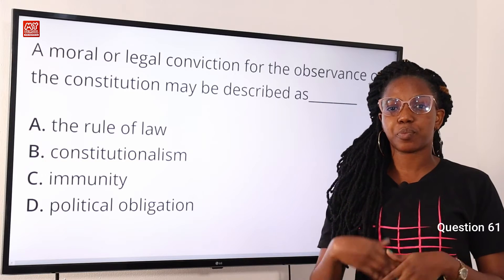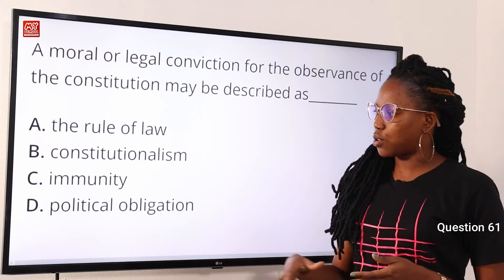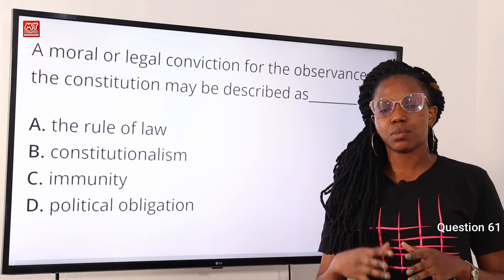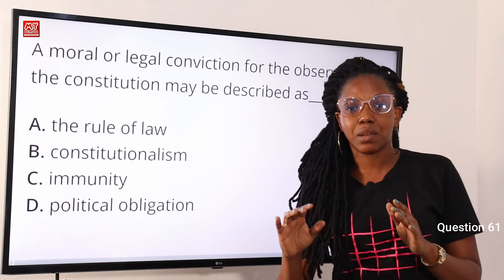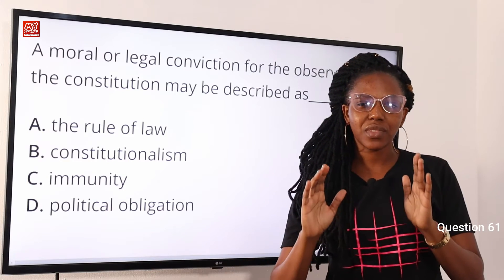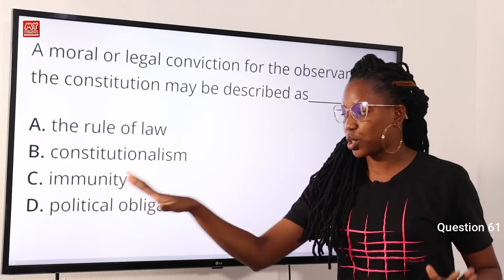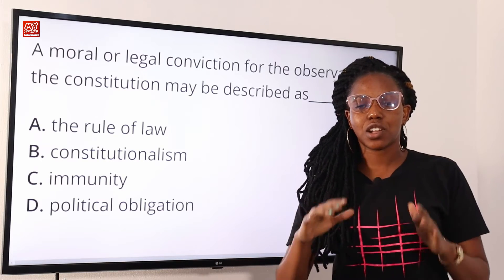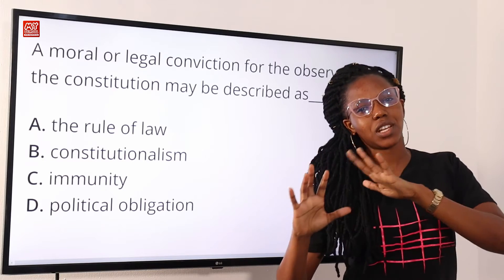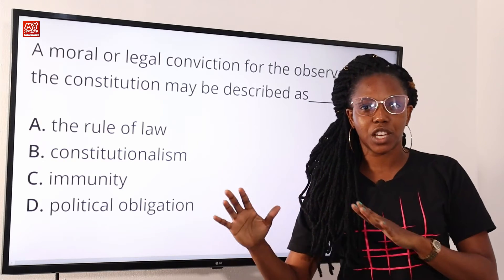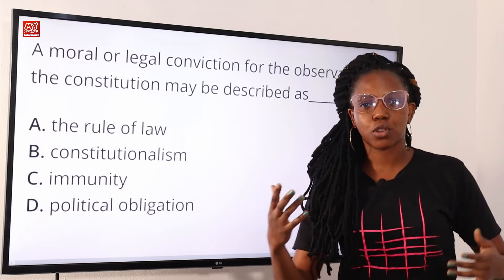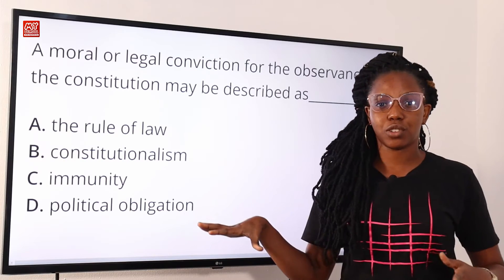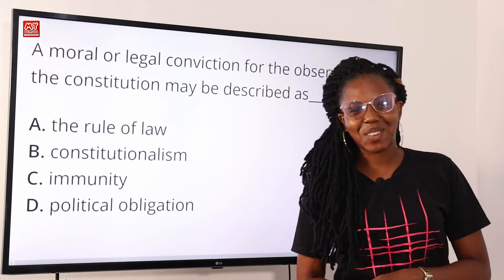However, the rule of law simply means supremacy of law. Immunity could be protection against something, maybe a disease. Political obligation is a moral obligation to obey the law — it is not limited to a legal obligation. Because it is a moral right for us to obey, that is political obligation. So option B is the correct answer to this question.